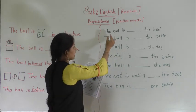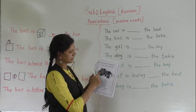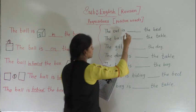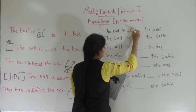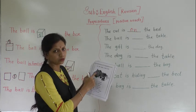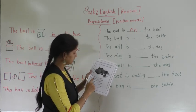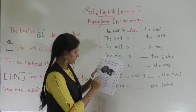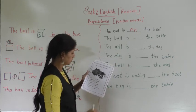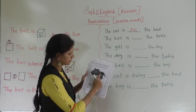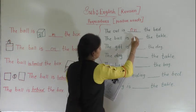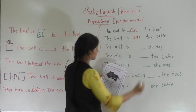The first sentence: the owl is — you can see the position of owl. Where is the owl? The owl is on the bed. The next sentence: the ball is dash the table. Where is the ball? You can see — the ball is on the table. Write: on the table.